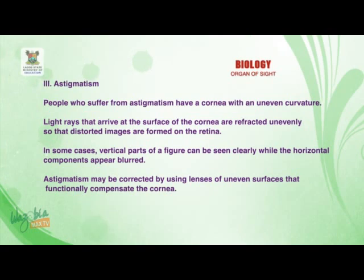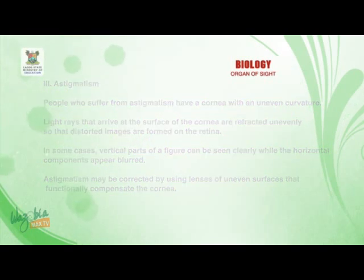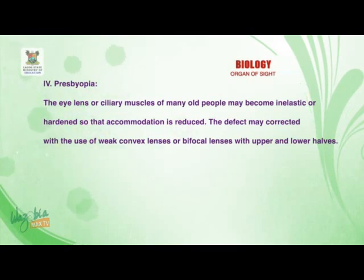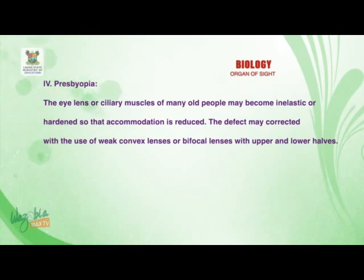Astigmatism may be corrected by using lenses with uneven surfaces that functionally compensate for the uneven cornea. The next defect is presbyopia. The ciliary muscles of many old people may become inelastic or hardened so that accommodation is reduced. This defect may be corrected with the use of weak convex lenses or bifocal lenses with upper and lower halves.